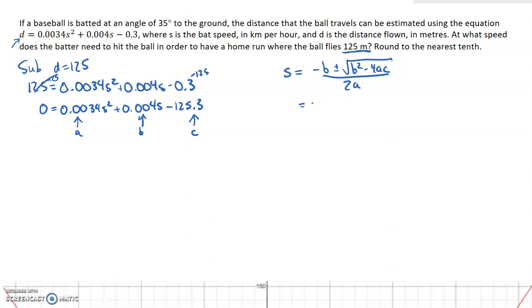So negative b, negative 0.004, plus or minus the square root—remember, the plus or minus is just going to give us two different answers at the end—0.004 all squared minus 4 times a is 0.0034, and c is negative 125.3.